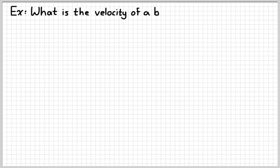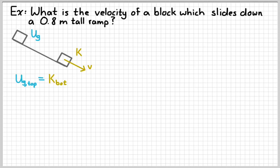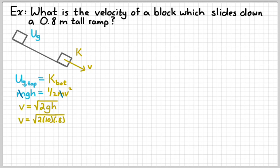Let's look at another example — a block on a 0.8-meter-tall ramp. We want to know how fast it's going when it reaches the bottom. A block at the top starts with potential energy, and at the bottom has kinetic energy. Energy is conserved, so mgh equals one-half mv squared. Canceling the m's and substituting in, we get a velocity of about 4 meters per second.